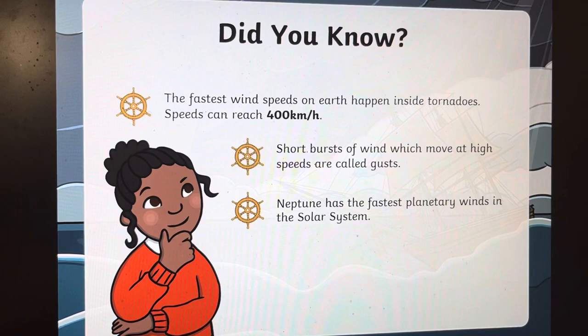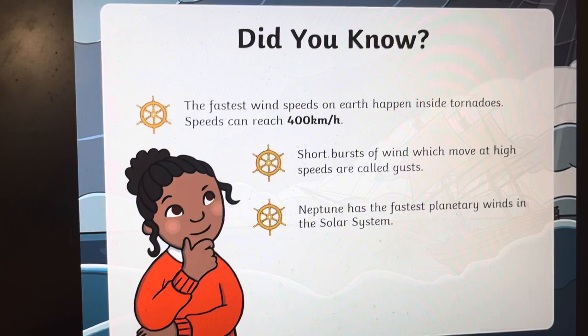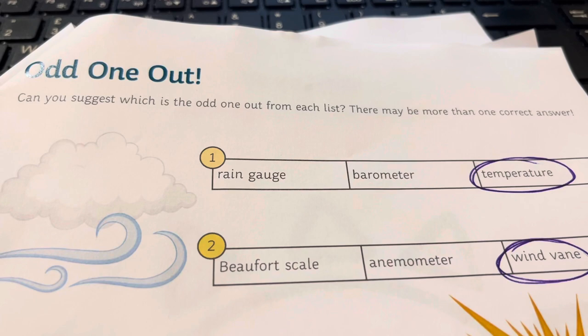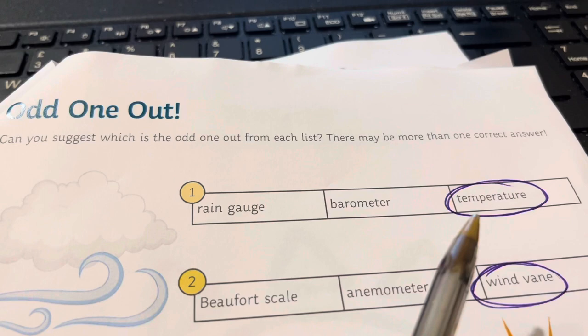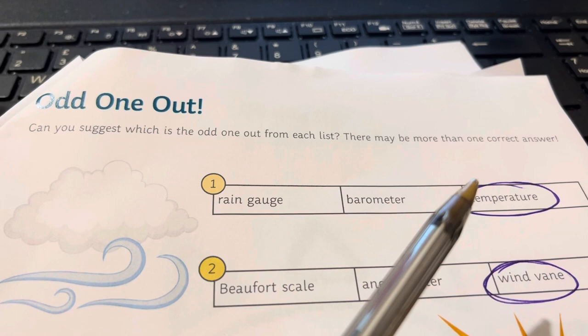So that's a little bit about Sir Francis Beaufort, our own Irish man who created the Beaufort scale. Now, can you notice the odd one out? We have a rain gauge, a barometer, and temperature. The answer is temperature — I have it already circled for you.